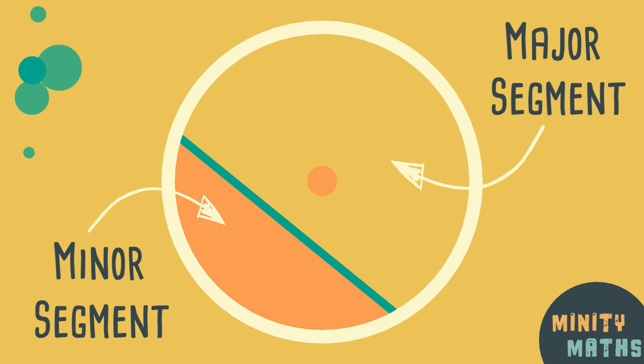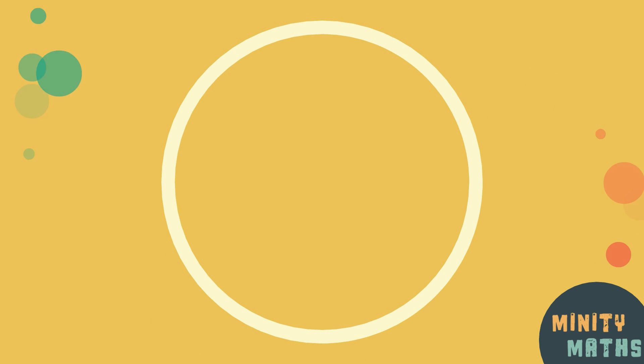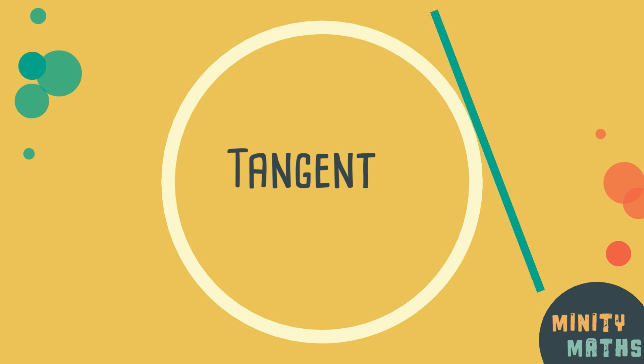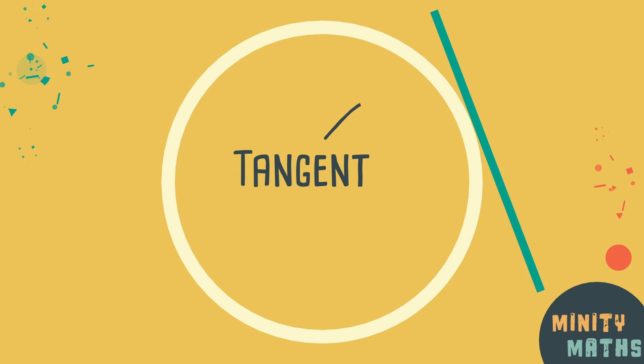And finally, a straight line which only touches one point of a circle's circumference is called a tangent.